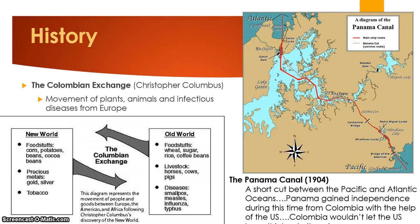Panama was once controlled by Colombia. When the United States approached Colombia about the canal, Colombia refused, and so the United States got behind Panama as they fought for their independence. Once they gained independence, Panama granted the US the rights to build this canal.